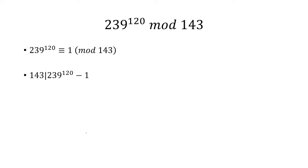And now we can say that 143 divides 239 raised to the 120 power minus 1. Because if I subtract 1 here, I have 239 raised to the 120 power minus 1 is congruent to 0 mod 143. So this thing right here is divisible by 143, since the remainder is 0, which means that 143 divides that entire expression.